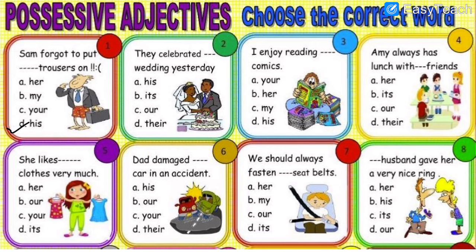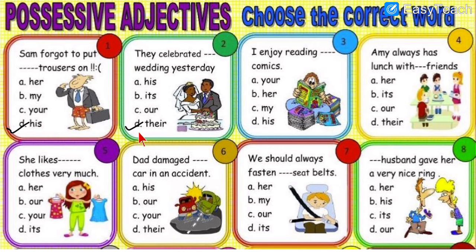Number two: they celebrated dash wedding anniversary. More than one — it is about a couple. The options are his, its, are, or their. When they are talking about themselves, we write 'their.' So: they celebrated their wedding anniversary.